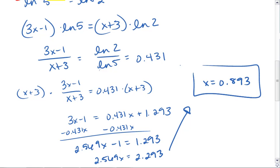If you've got a number that's slightly off, that might be due to rounding error. Just double check all your math, double check your calculations, make sure you follow the same steps, and you should be good.